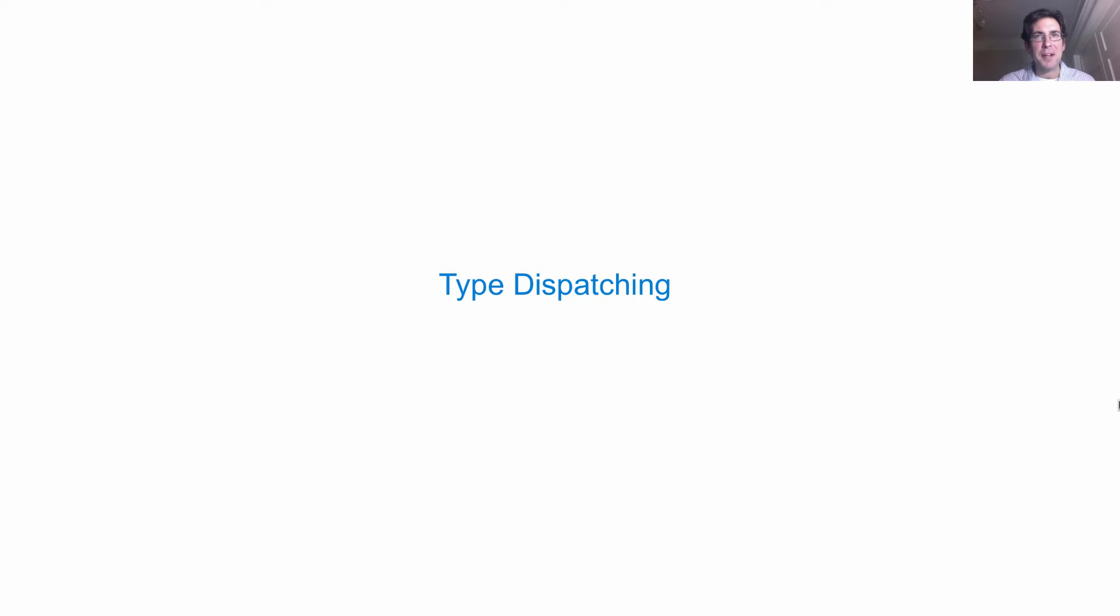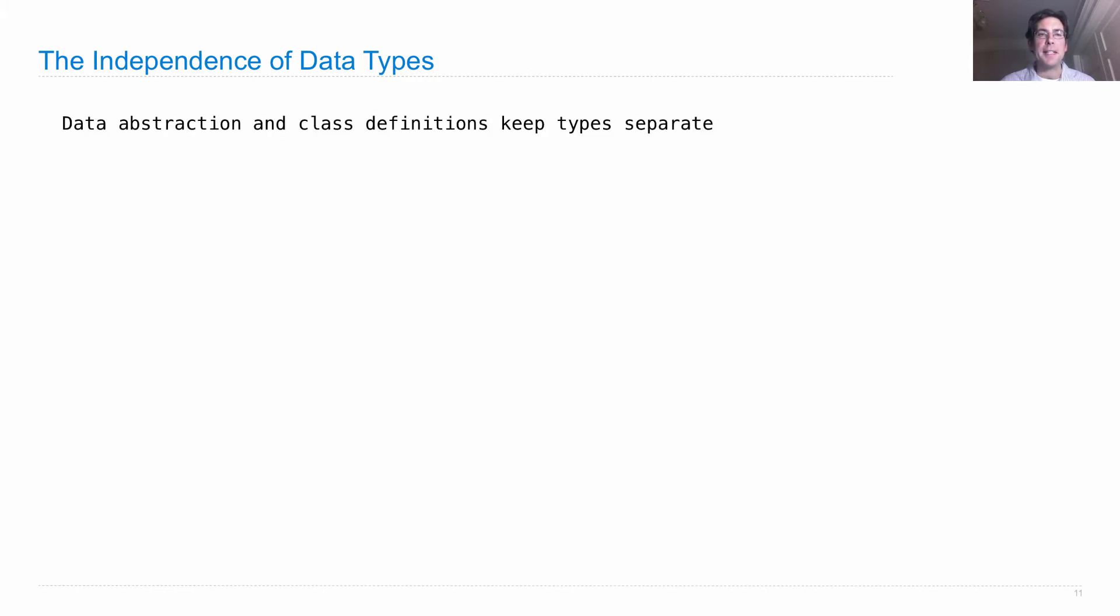Well, we have rational numbers and we have complex numbers, but how do they relate to each other? We've gone to great lengths to establish the independence of different data types.